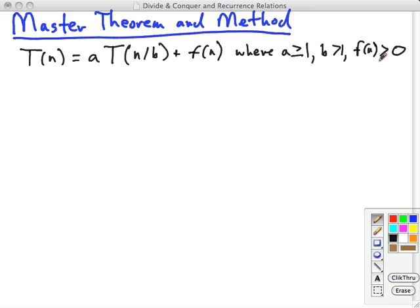So if we have a recurrence relation of this form, we can apply the master method based on the theorem in which we compare f(n), right here, to n log base b of a under asymptotic inequality as follows.